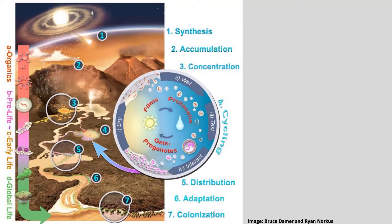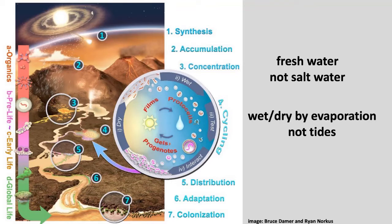In the hot spring model, life through wet and dry cycles can perhaps create something useful inside what they call gels and proto-genotes. That's the hot spring model: fresh water not salt water, wet and dry cycles by evaporation not by tides, and UV to drive the process. Currently in 2021, those are the two environments that are the best candidates we have for the origin of life. There are two camps now — they're debating, and perhaps they should cooperate more, or maybe we'll find some entirely new regime.